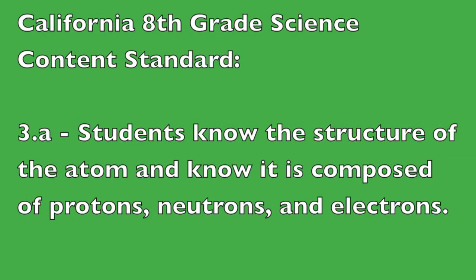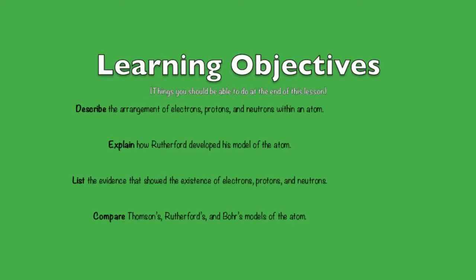This lesson covers California 8th grade science content standard 3a, which states that students know the structure of the atom and know it is composed of protons, neutrons, and electrons. The learning objectives — things you should be able to do by the end of this lesson — are as follows: you should be able to describe the arrangement of electrons,